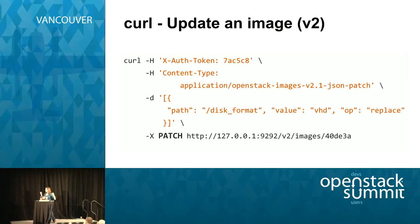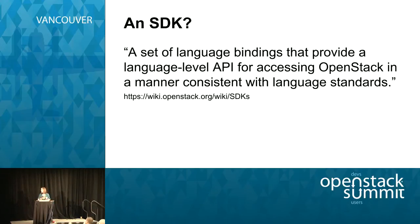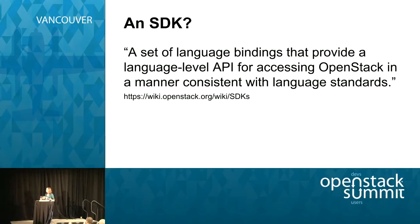The complexity was too much and we didn't want to reimplement everything. We knew there were already other utilities accomplishing this for us — we didn't need to reinvent a framework. That's why we tried to use an SDK: a set of language bindings providing a language-level API for accessing OpenStack in a manner consistent with language standards. We could use a Ruby library to do OpenStack things, and that sounded really great.